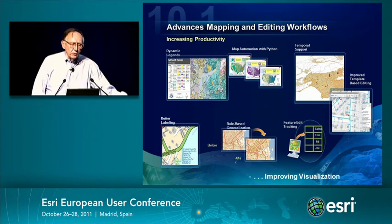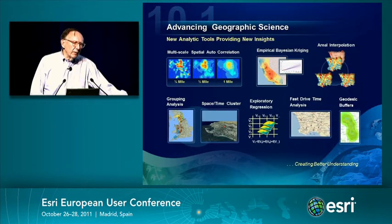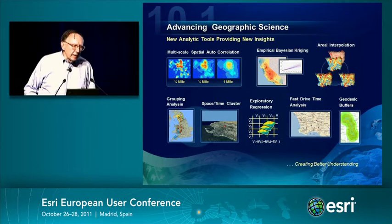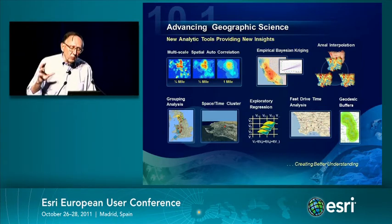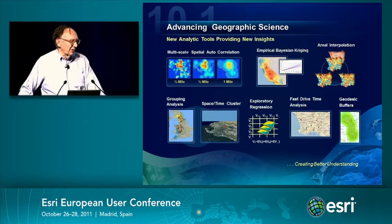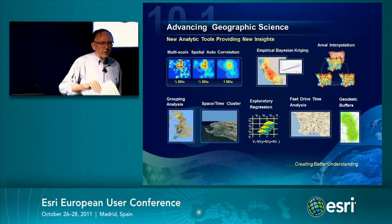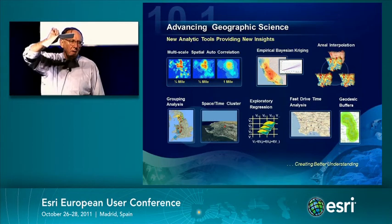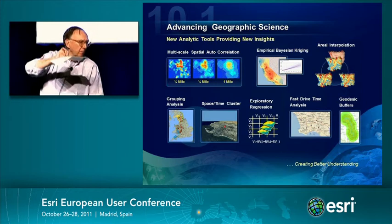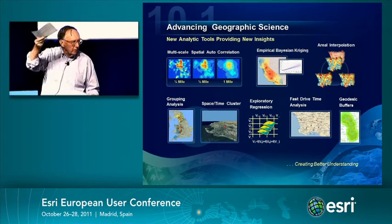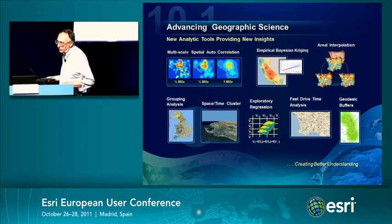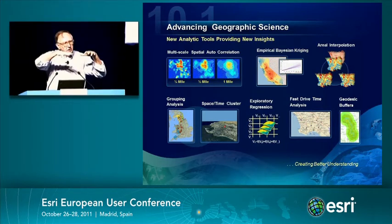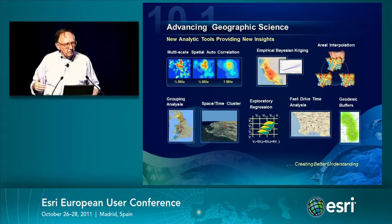There are also more map automation tools using Python. In the area of science, there are many new analytic operators — things like grouping analysis or multiple-scale spatial autocorrelation. One of my favorites is something called exploratory regression. If I have one map, let's call it a disease pattern, I can associate that with a series of other map layers and try to find some statistical correlation between the disease that's occurring and other layers.